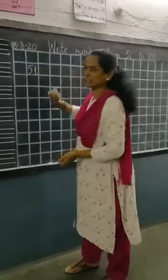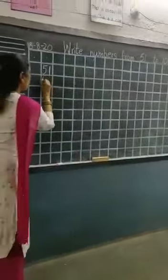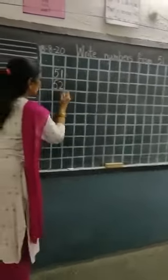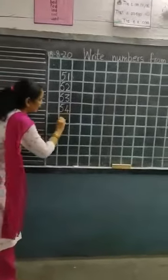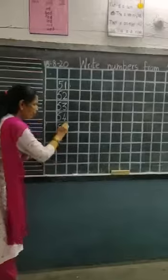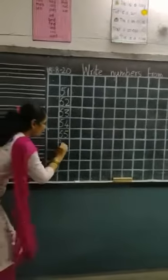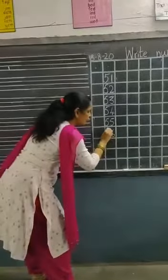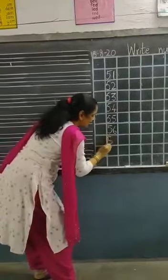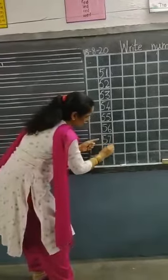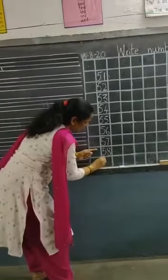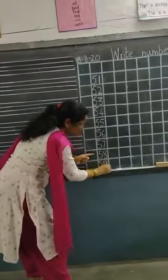After 51, what number? 52. After 51: 5, 2 — 52. 5, 3 — 53. 5, 4 — 54. 5, 5 — 55. 5, 6 — 56. 5, 7 — 57. 5, 8 — 58. 5, 9 — 59.